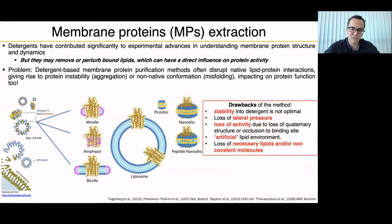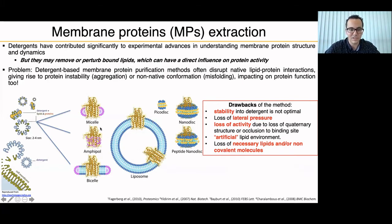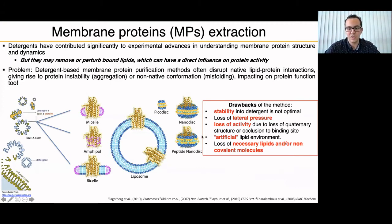As I just said, protein stability in detergent is not optimal, and you have to spend a lot of time and money to find the correct detergent. Once you are in the detergent, you lose the lateral pressure that you have in a bilayer. But if you reconstitute inside a liposome, you don't have the real environment of the cell membrane — you have an artificial lipid environment. Therefore, necessary lipids that could be important for protein function or activity could be lost, and what you're observing is not the real picture of how the protein functions.